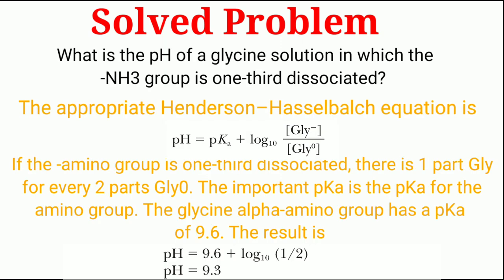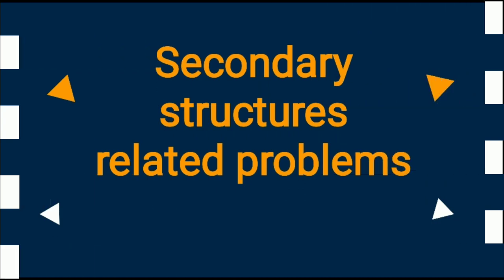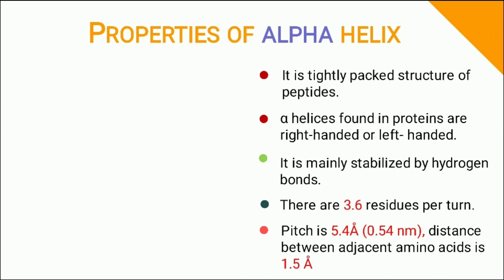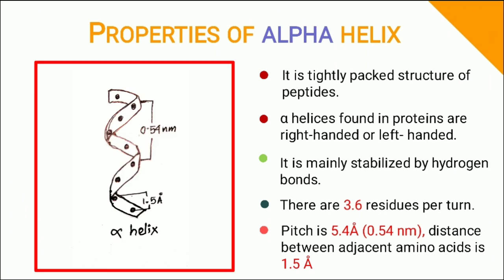In the next part, I will discuss about secondary structure of proteins. Alpha helix and beta sheet are the most important 2D structure. Alpha helix is tightly packed structure and can be both right-handed or left-handed. There are 3.6 amino acid residues per turn and length of 1 turn is 0.54 nm.